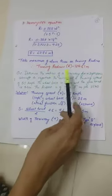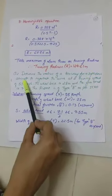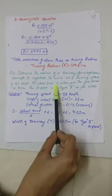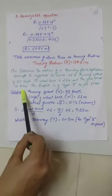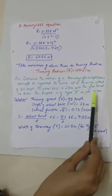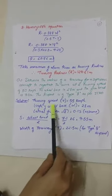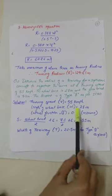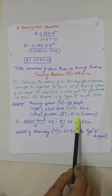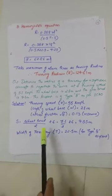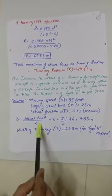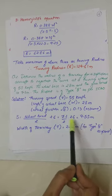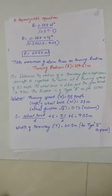The other type of numerical: Determine the radius of a taxiway for a supersonic aircraft to negotiate the curve at a turning speed of 55 km/h. The wheelbase is 28 m and the gear tread is 7.1 m. The airport is of type B as per ICAO. Given data: V = 55 km/h, W = 28 m, lateral friction F = 0.13 (assumed since not given in the question).